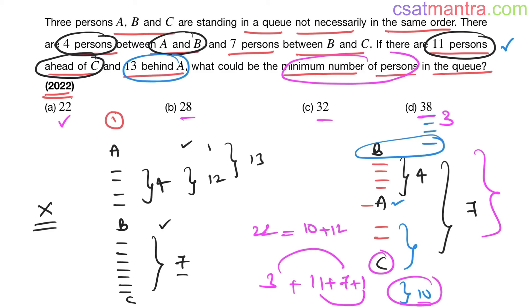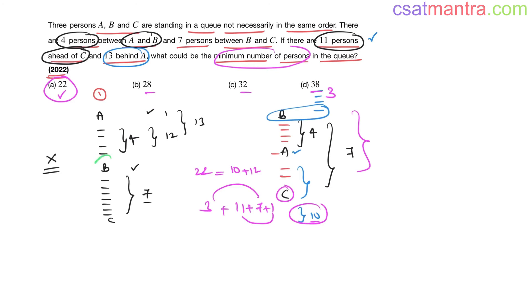See, one time we had B in the middle, that doesn't satisfy the given conditions. This satisfied, this gave us the minimum number of persons. This will definitely give, because now see from A to C we have only two gap, but here A to C see how much gap, 12 my friends. So this will give the minimum number of persons, and also in this the conditions are not satisfied, 11 persons ahead of C.